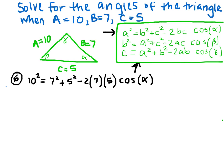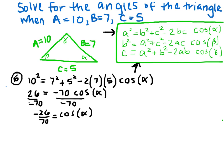By doing algebra, we want to get cosine of alpha by itself. We can simplify this to be 26 equals negative 70 times cosine of alpha. So we divide by negative 70, and we're left with negative 26 divided by 70 equals cosine of alpha. If we take the inverse cosine of both sides, we find that alpha will equal 118.8 degrees.